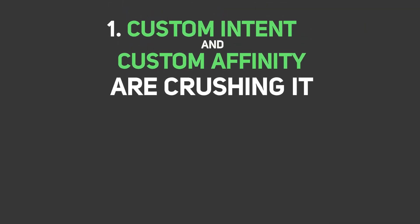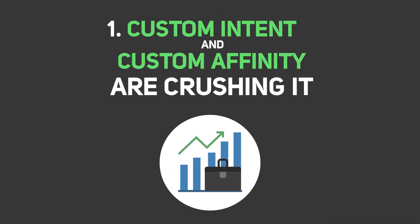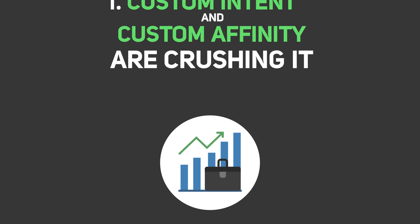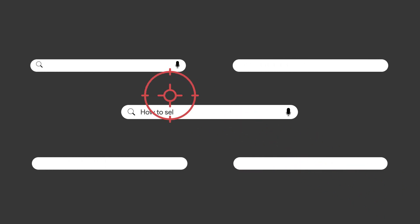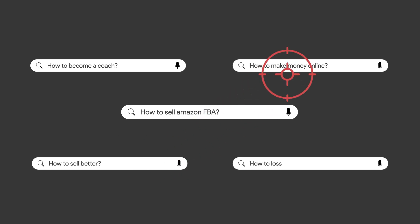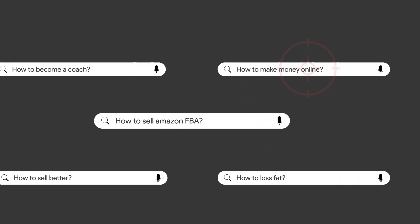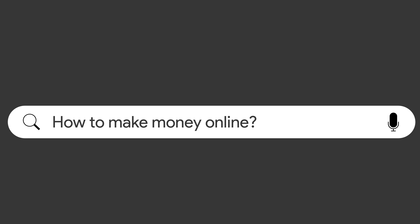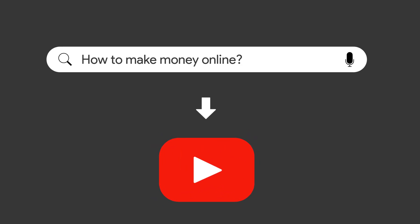Number one is that custom intent and custom affinity audiences have been really doing well over the last few months. So what is a custom intent audience? A custom intent audience is basically where you target people based on what they're searching in Google.com and then you target them when they're on YouTube. So if somebody goes into Google.com and searches for 'how to make money online,' you can target them on YouTube even though they searched that on Google.